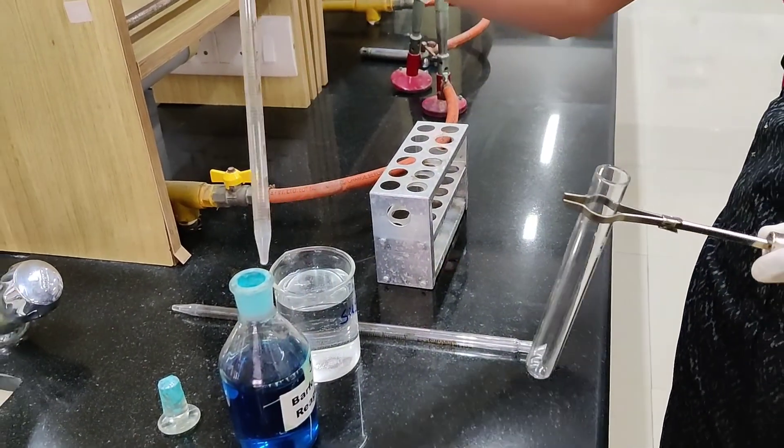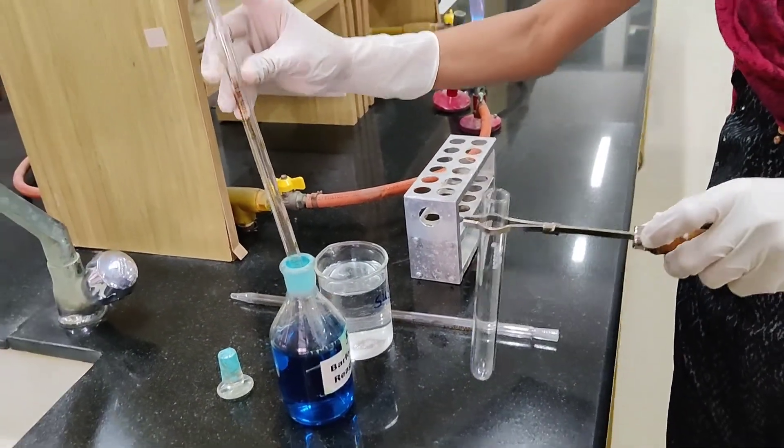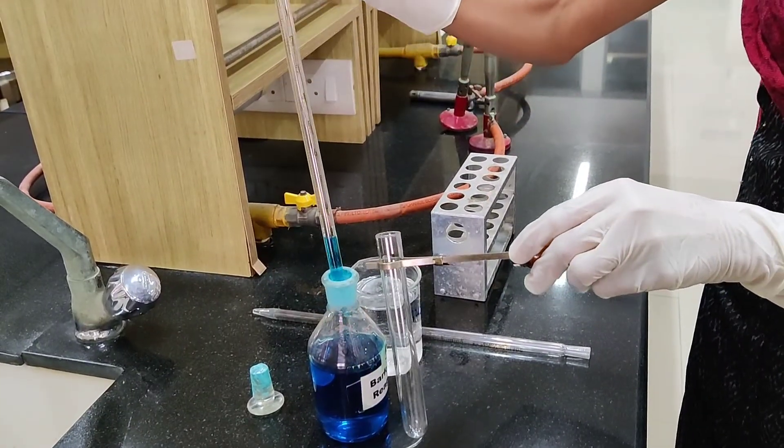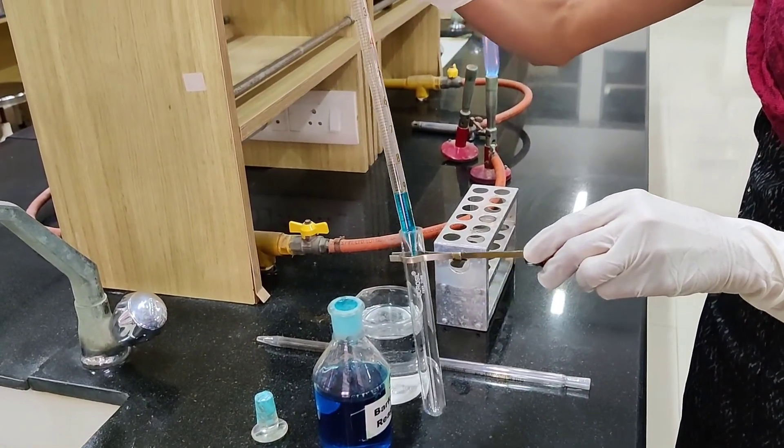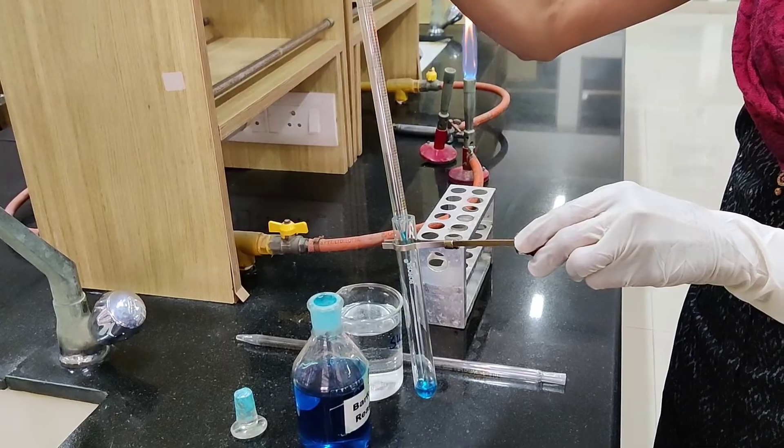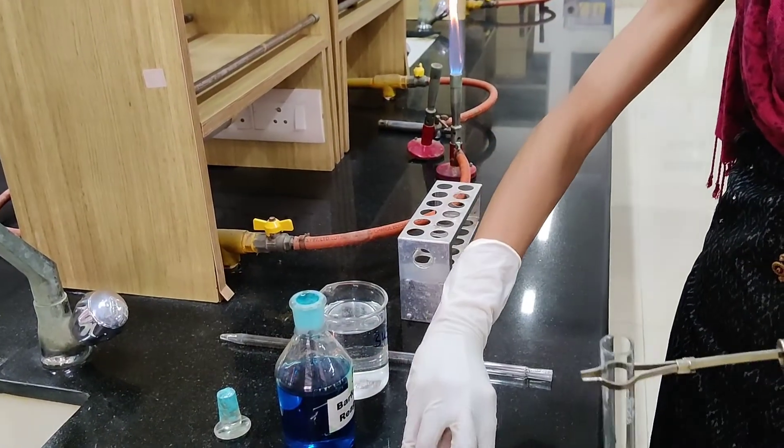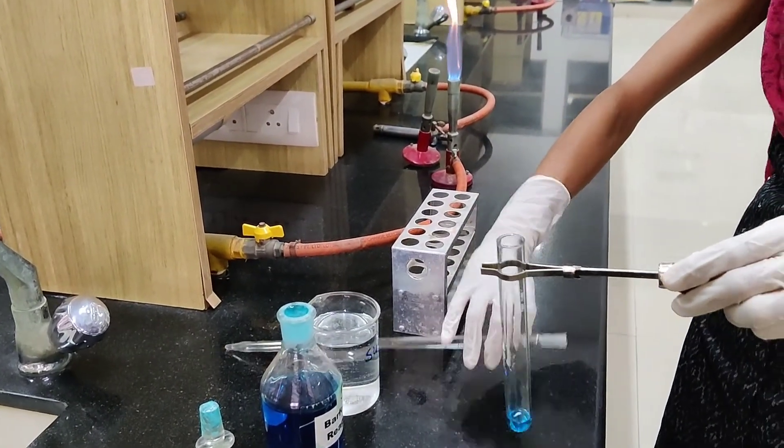First, take 2 ml of Barford's reagent in the test tube with the help of a glass pipette. After taking the Barford's reagent, add 2 ml of sugar solution in the same test tube.